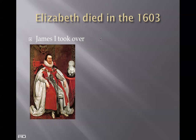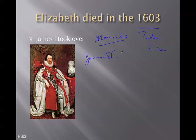One reason England was in turmoil is that they didn't have very strong leadership — most of the monarchs at this time were a little crazy, not very good leaders. Queen Elizabeth died in 1603, ending the Tudor line. Henry VIII was a Tudor, and James I — who was James VI of Scotland — started the Stuart line of monarchs.